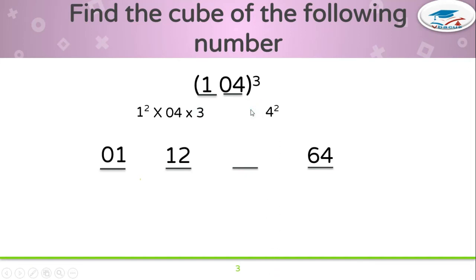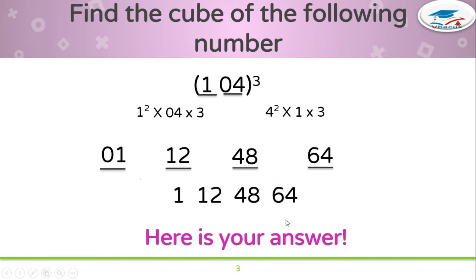Now square of 4 should be multiplied by 1 and 3. Square of 4 is 16, 16 times 1 is 16, 16 times 3 is 48. You must remember there should be only 2 digits on every dash. If 3 digits come, then you have to take the third digit carry forward to the next number. Since there are 2 digits on every dash, we can write the answer as it is. So this is your final answer.